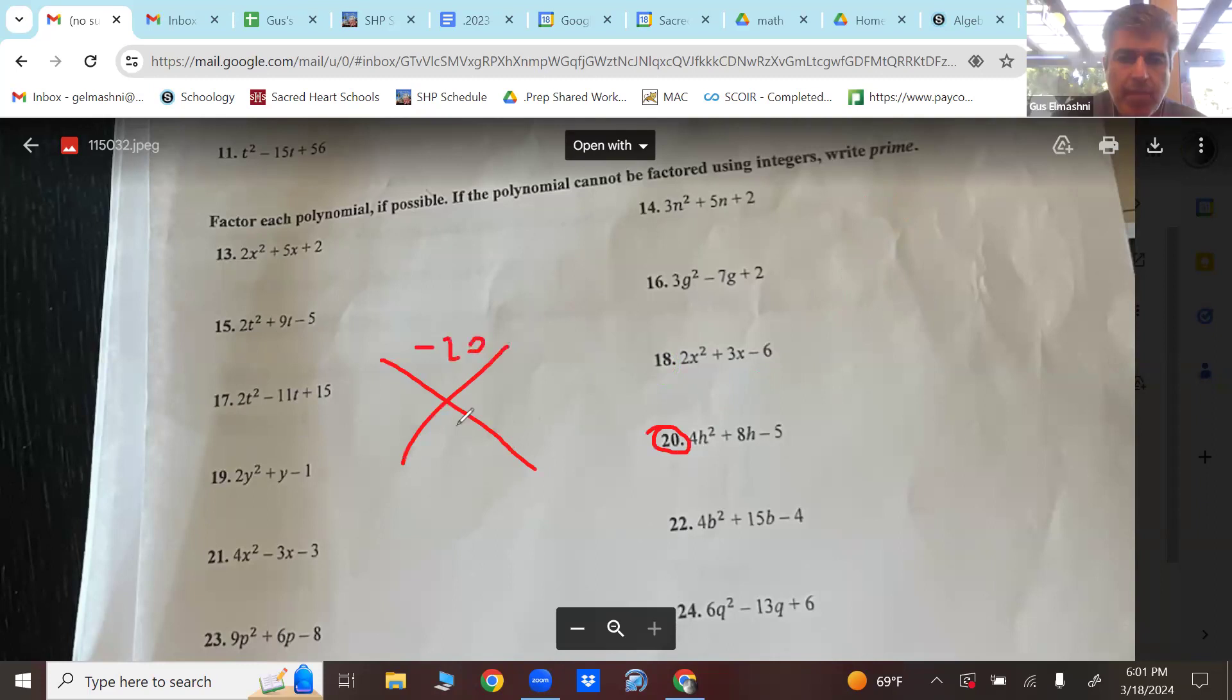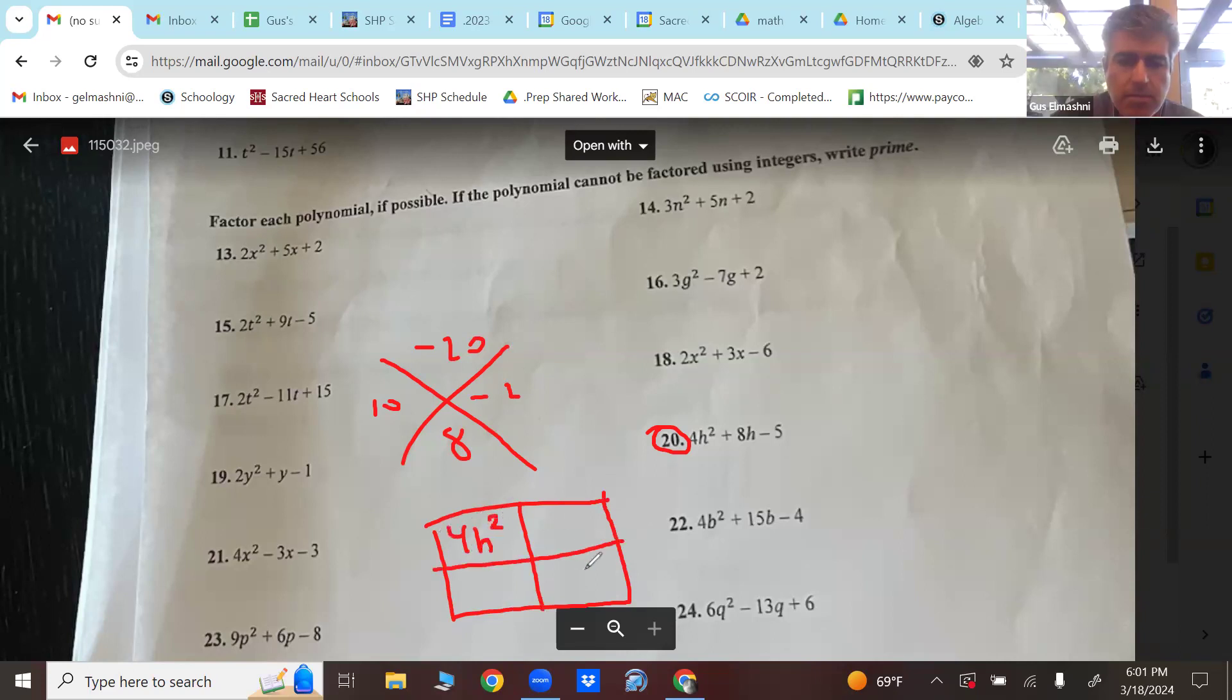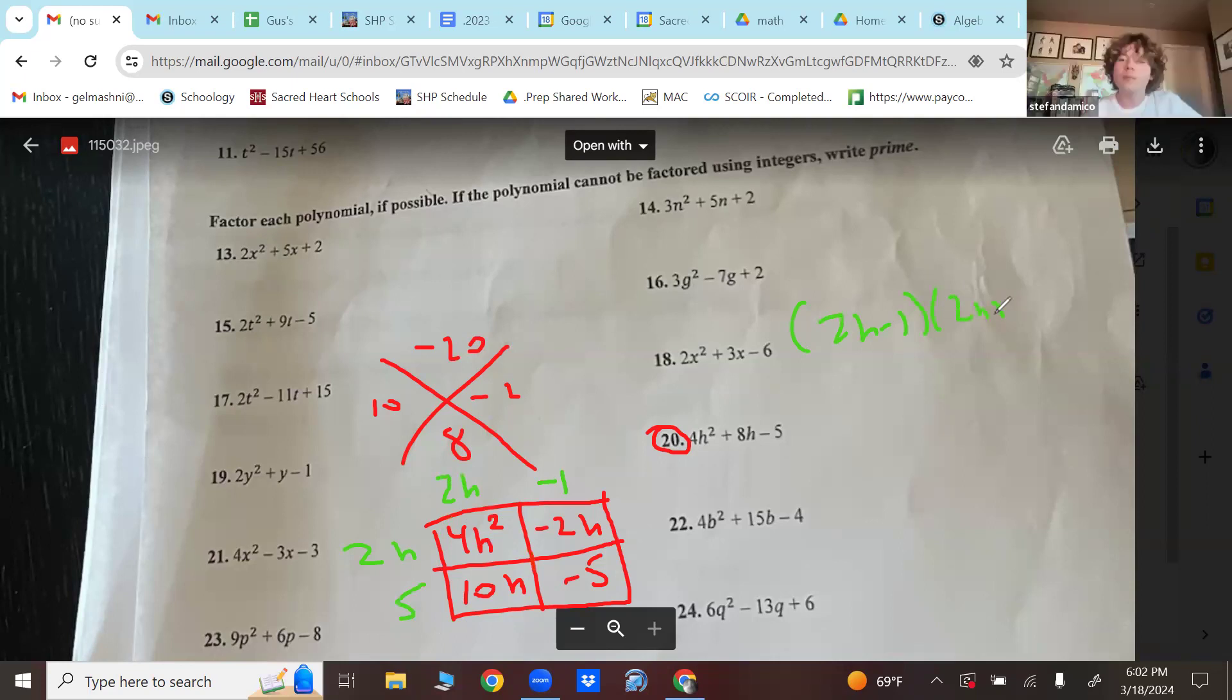Let's do 20 quickly here. Negative 20 and eight. I know it's going to be 10 and negative two. Two H at the GCF. Then over here, two H also because there's square. At the bottom there'll be five. And then at the top corner that would be negative one. There we go. Much better. We'll slowly need a little more practice. But okay, getting better. Just slow down. Don't rush it.